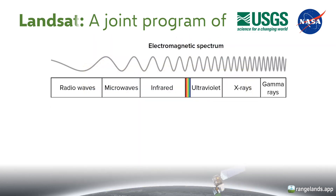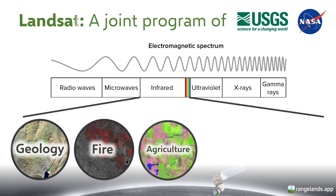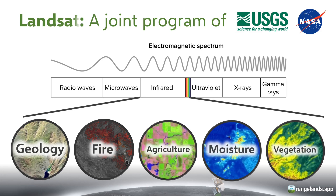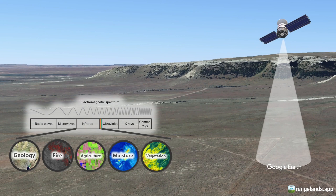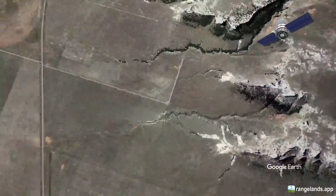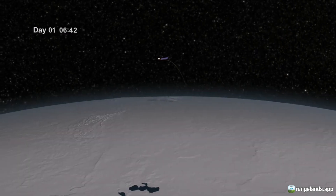Just like our Range Sense example, Landsat collects measurements of different portions of the electromagnetic spectrum that can tell us about rangeland ecosystems. A variety of factors affect rangeland vegetation, and information from Landsat can tell us about anything from the underlying geology or fire severity to agricultural crops, water, soil moisture, and of course the vegetation itself. Landsat collects this information continuously and across the entire globe.